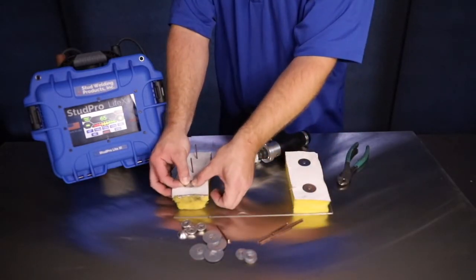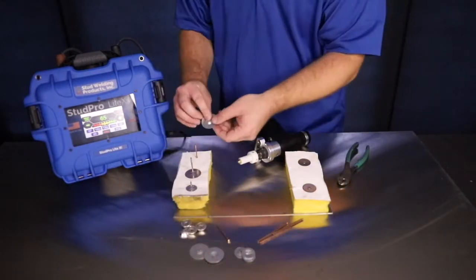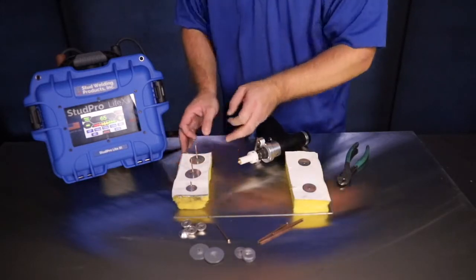To secure insulation after applying weld pins, use washers as shown. Once weld pins are trimmed, the sharp point can be covered by installing a dome cap, as demonstrated.